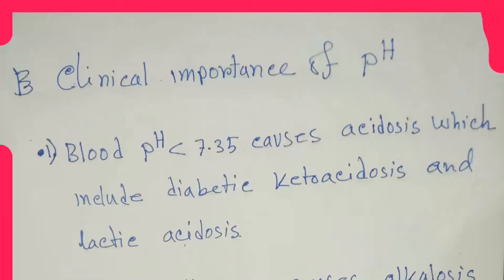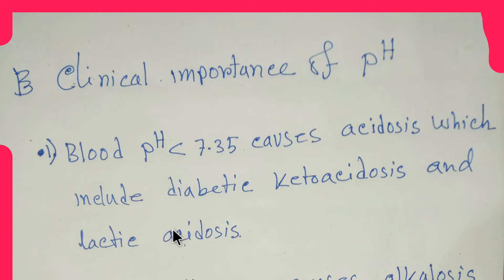Now for the clinical importance of pH: blood pH less than 7.35 causes acidosis, which includes diabetic ketoacidosis and lactic acidosis.